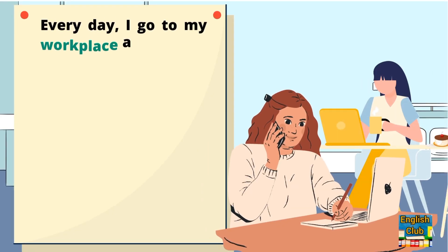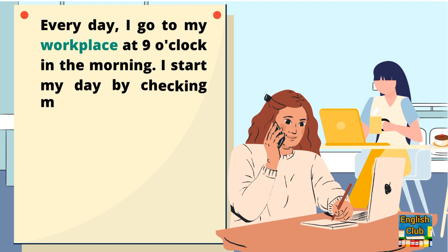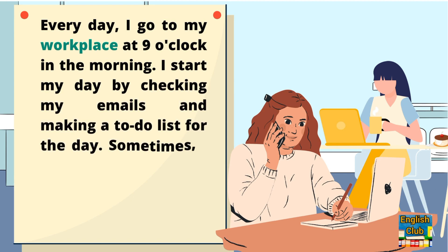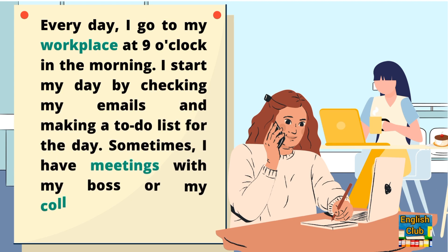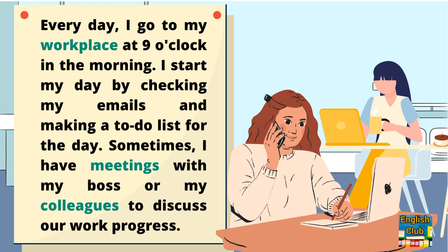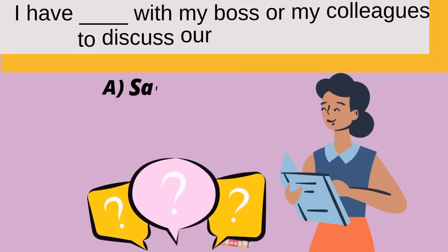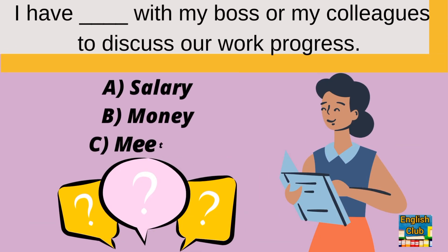Every day I go to my workplace at 9 o'clock in the morning. I start my day by checking my emails and making a to-do list for the day. Sometimes I have meetings with my boss or my colleagues to discuss our work progress. I have — A: salary, B: money, C: meetings — with my boss and my colleagues to discuss our work progress.